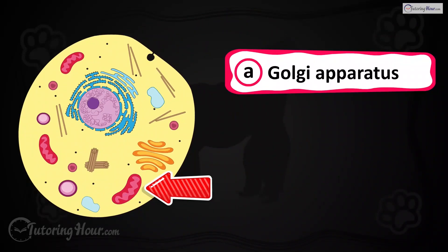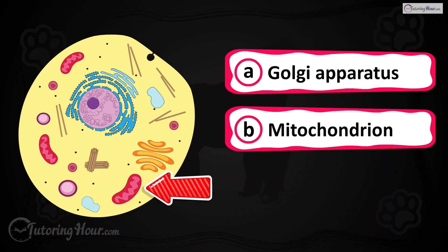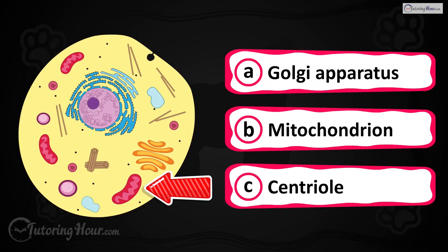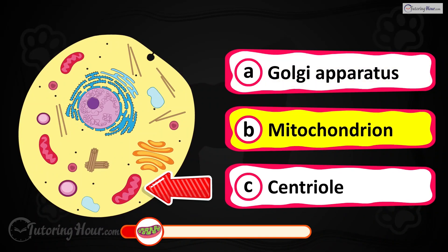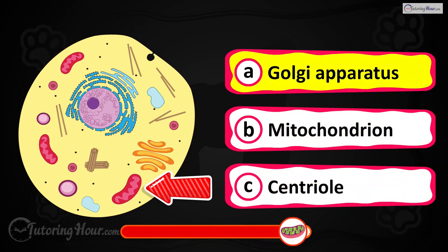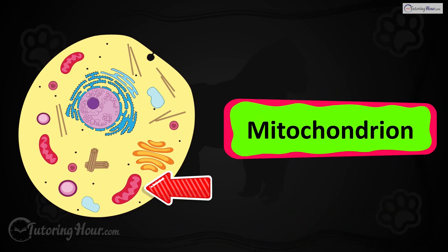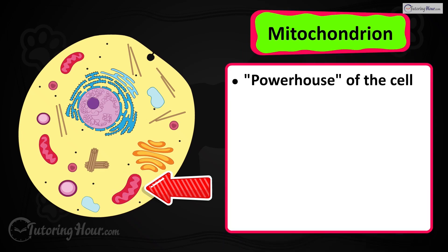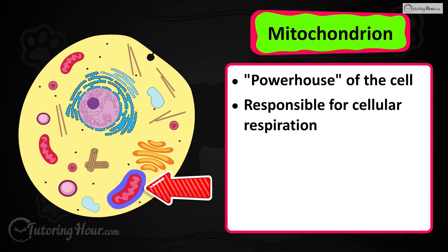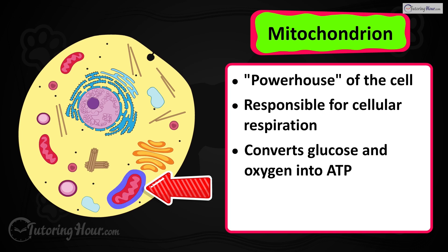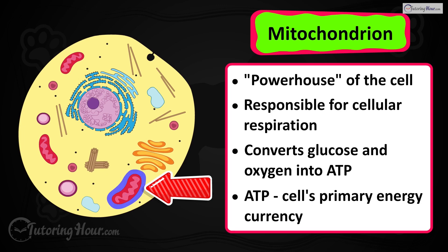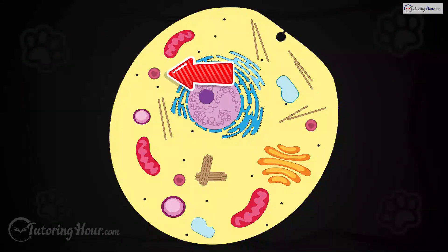Can you identify the highlighted part in the cell? Is it A) Golgi apparatus, B) mitochondrion, or C) centriole? The correct answer is the mitochondrion. The mitochondria are the powerhouses of the cell, responsible for cellular respiration. They convert glucose and oxygen into ATP (adenosine triphosphate), the cell's primary energy currency.